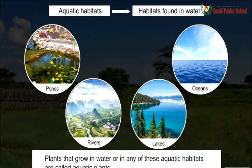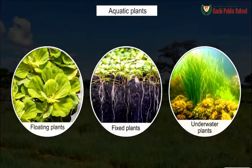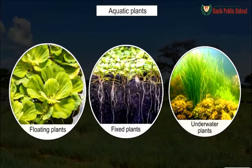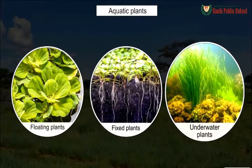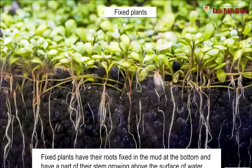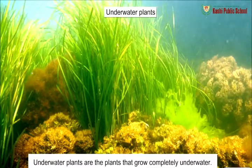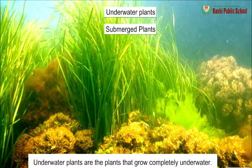Plants that grow in water or in any of these aquatic habitats are called aquatic plants. Aquatic plants can be further grouped into three types: floating plants, fixed plants, and underwater plants. Floating plants are not fixed with the mud and remain freely floating on the surface of the water body. Fixed plants have their roots fixed in the mud at the bottom and have a part of their stem growing above the surface of water. Underwater plants are the plants that grow completely underwater. They are also called submerged plants.